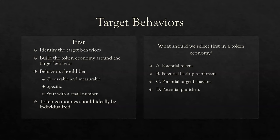So, what should we select first in a token economy? A) potential tokens, B) potential backup reinforcers, C) potential target behaviors, or D) potential punishers. Tokens and backup reinforcers go hand in hand, but those follow our selection of target behaviors. Remember, we build around the target behaviors, not the other way around. The answer is C — potential target behaviors.